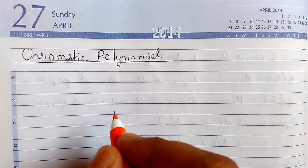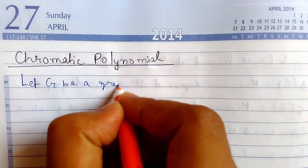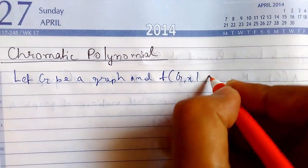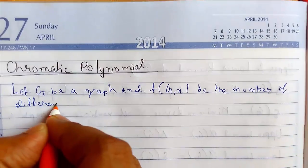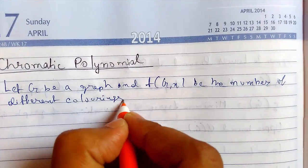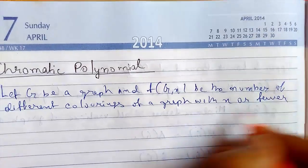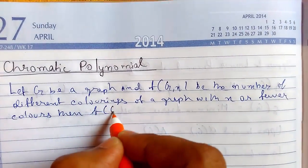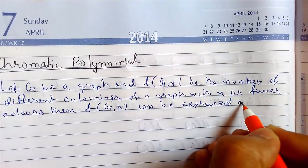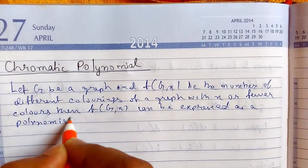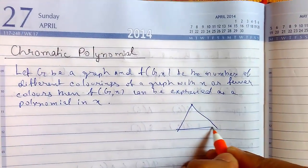Welcome back guys. Today we will be continuing graph colorings — today we will be learning about chromatic polynomial. Let G be a graph and f be the number of different colorings of the graph with x or fewer colors. Then f can be expressed as a polynomial in x. This is known as the chromatic polynomial.